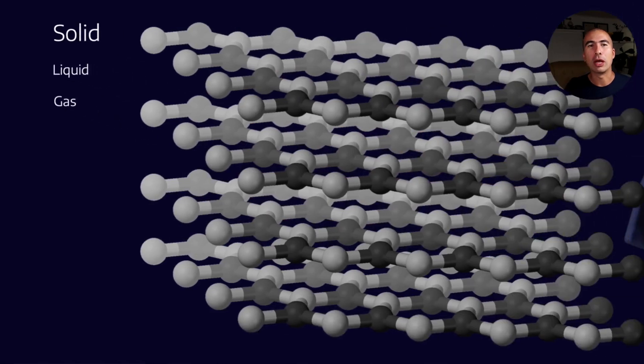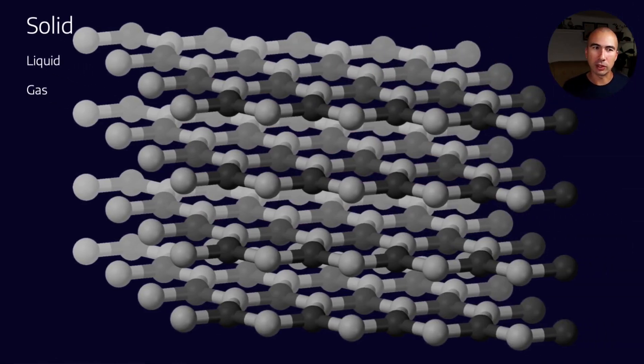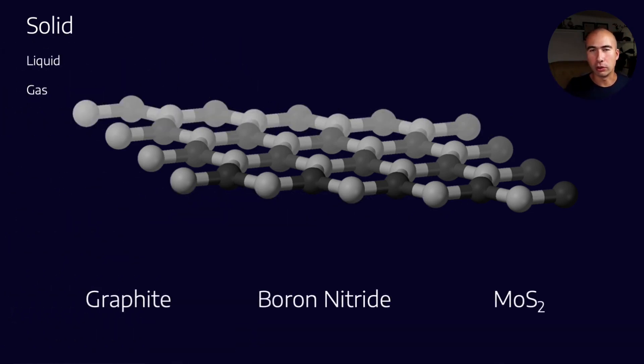So what's the primary way that they function? Well, most of them are what we call lamellar solid materials. And that means that they have these atomically thin planes that are quite strong and well held together. But the actual forces between those planes are very weak. And that means that they can slide over each other really well.